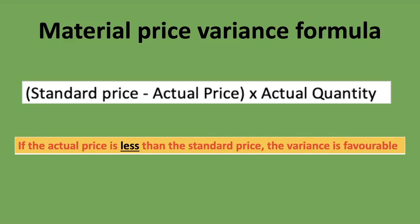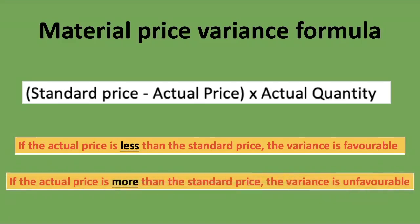Here we are paying for our materials, so if the actual amount paid for material is less than the standard amount we expected to pay, then we have saved money — that is why it's favorable. Always remember: if the actual is less than the standard, the variance is favorable because we paid less than we expected. If the actual is more than the standard price, the variance is unfavorable because we paid more than we expected. I've highlighted where 'less' and 'more' appear and what that means — favorable or unfavorable.